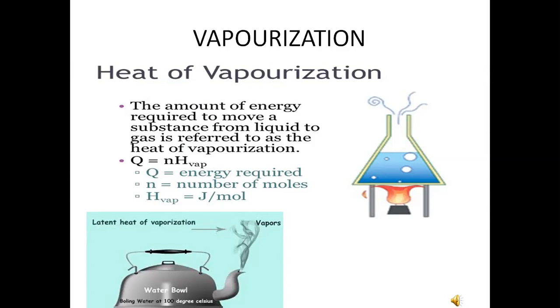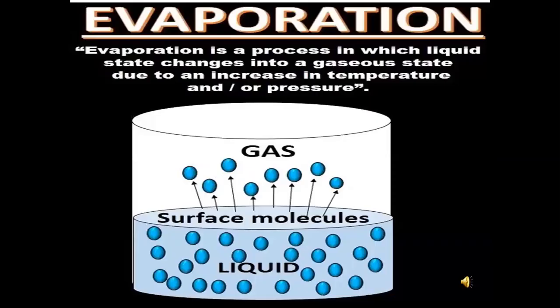The amount of energy required to move a substance from liquid to gas is referred to as the heat of vaporization. The formula is: q = n × H_vaporization, where q is the energy required, n is the number of molecules, and H is measured in joules per mole. Evaporation is a process in which the liquid state changes into a gaseous state due to an increase in temperature or pressure. Evaporation is the technique used to separate dissolved solids from a liquid mixture, such as extracting salt from sea water in salt pans. It is used in drying clothes and drying fish.